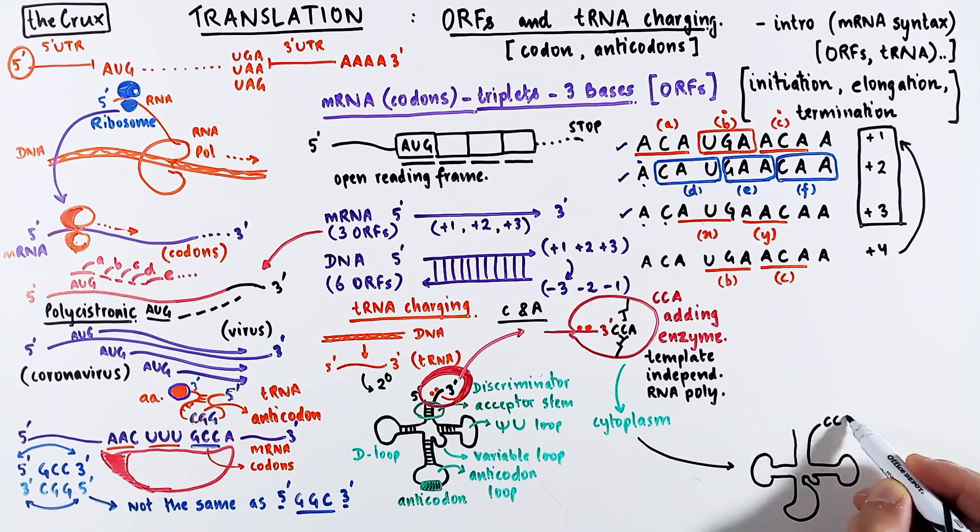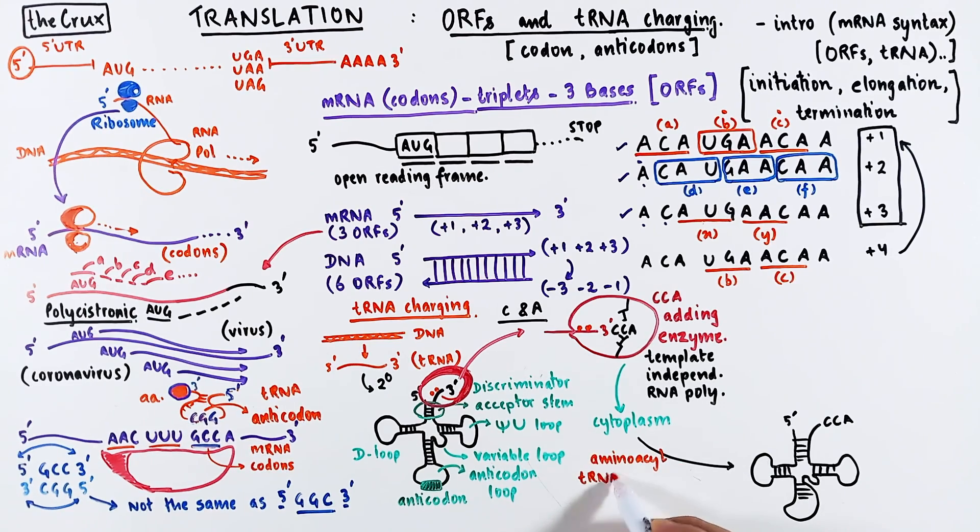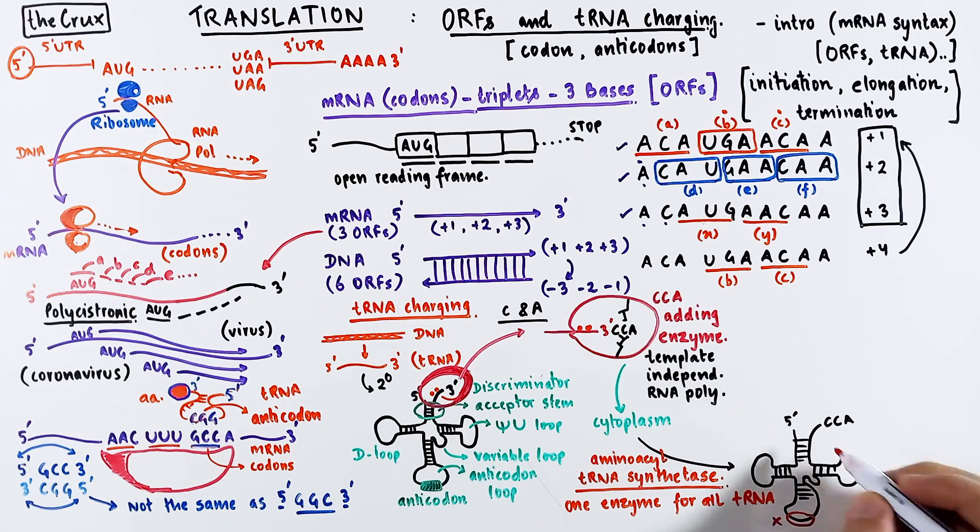After this CCA adding enzyme adds CCA to the transfer RNA in the nucleus, this transfer RNA is transported to cytoplasm. Now in the cytoplasm, there is an enzyme called aminoacyl tRNA synthetase, which processes the transfer RNA for the next step, which is to attach it with an amino acid. So specifically, there is only one of this enzyme for all the transfer RNA. Now if there is only one enzyme for all tRNAs, how does it know which amino acid it should attach to a specific transfer RNA? Now this enzyme cannot base its specificity towards the transfer RNA based on this anticodon region, because then you would need 61 different enzymes, given that there are 61 different tRNAs that code for specific amino acids. But we only have this one enzyme. So how does it know which amino acid should go with which transfer RNA?